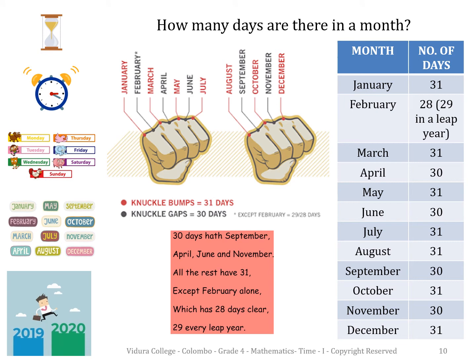For example, January has 31 days. If it is a leap year, February has 29 days. March has 31 days. April has 30 days, and so on.